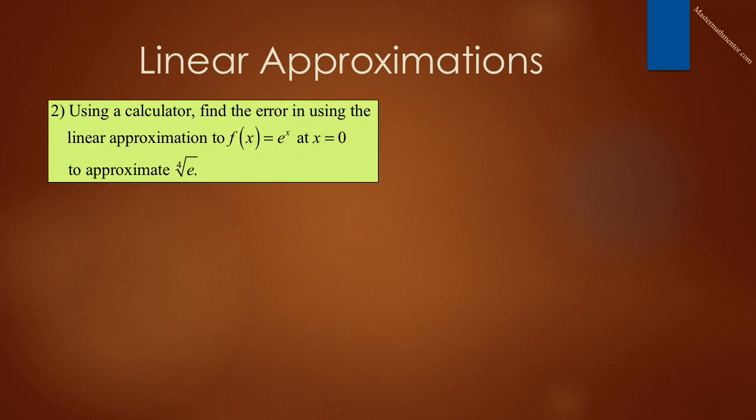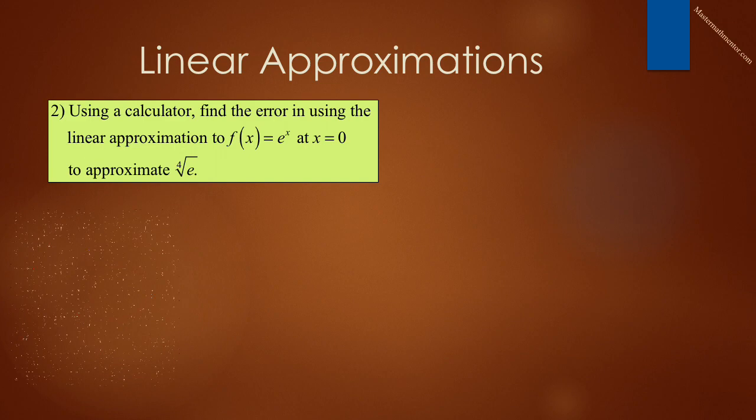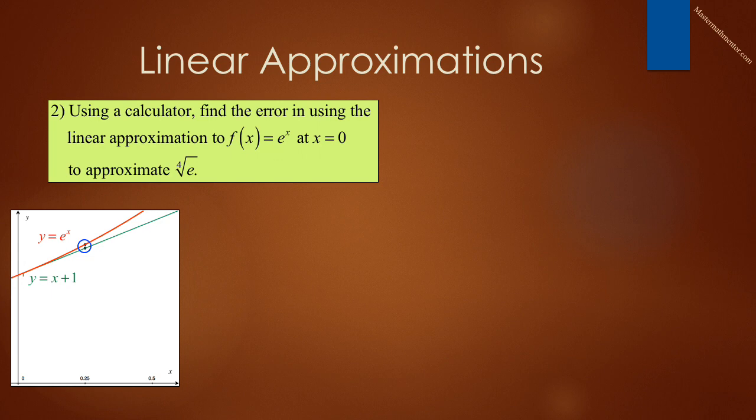In problem 2, you are instructed, using a calculator, find the error in using the linear approximation to f of x equals e to the x at x is equal to 0 to approximate the fourth root of e. Sounds complicated. Let's see what's happening graphically. We graph in red y equals e to the x. We also graph the tangent line to that curve at x is equal to 0 in green. We see that at x is equal to 0.25, the value of the function and the value of the approximation are very close to each other. It is shown in a circle. The error is the difference between those two points.